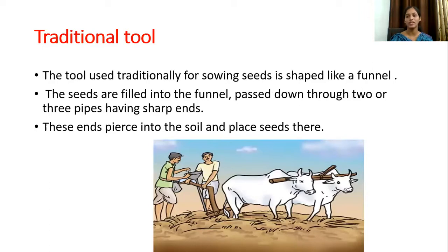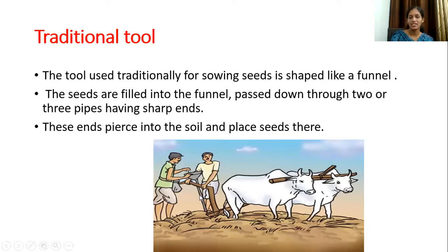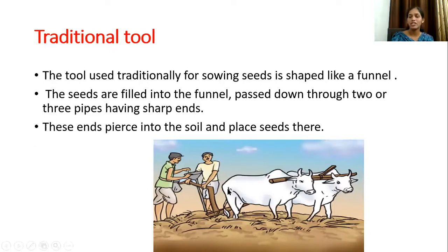Now we are going to sow the seed into the field. The tool used traditionally for sowing seeds is funnel-shaped — you can see one funnel attached here. The seed is filled into the funnel and goes down through two or three pipes having a sharp end. At the last end there are sharp pipes, and the seeds are placed into the ground. This is the traditional method, done using bulls.